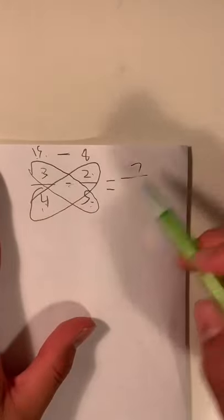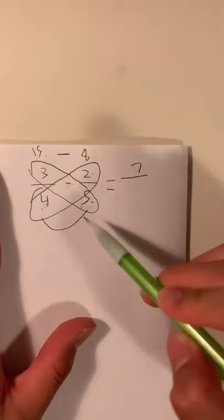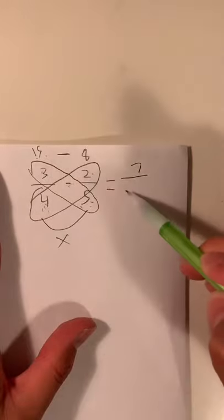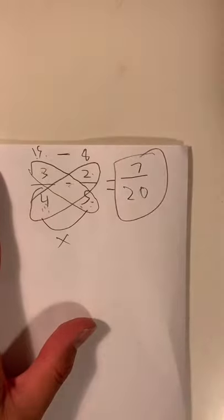And your last step is always to multiply these two. So multiply the denominators, 4 times 5 is going to be 20. That right there is going to be your answer.